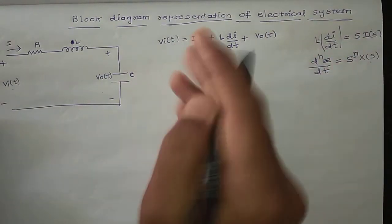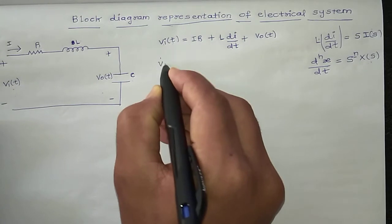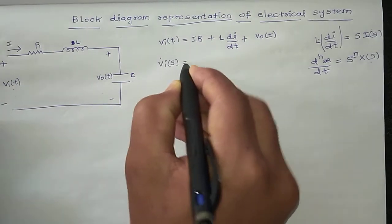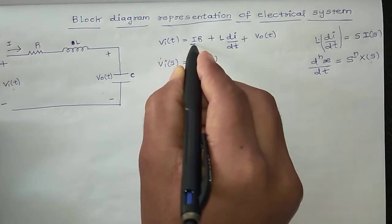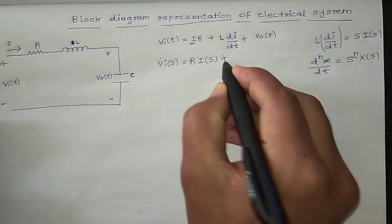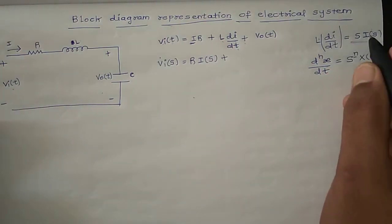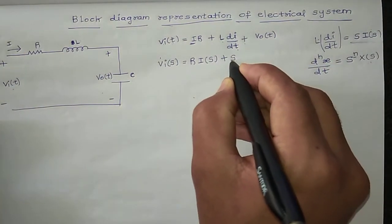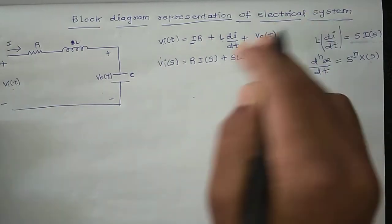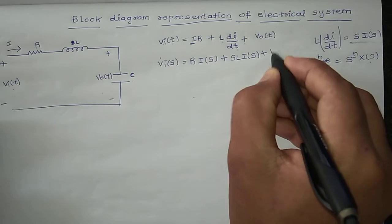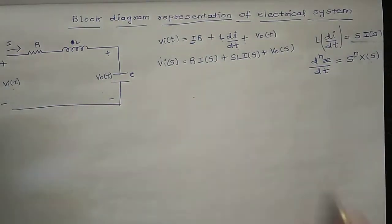And instead of x it has i, so it's written i(s). So this is the formula. If both sides Laplace apply, Laplace of Vi(t) equals Vi(s). That equals R into i(s) plus, current in time domain is transformed into current in Laplace, plus L into di/dt. This is di/dt. Now I have s into i(s), so sLi(s) plus Vout(s).